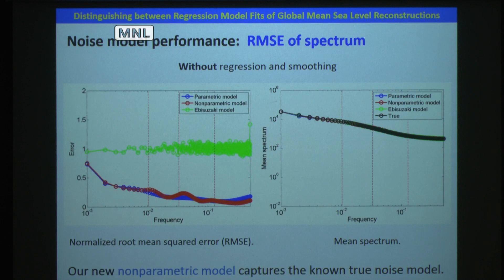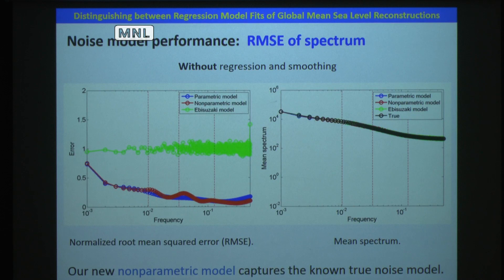The green line represents the Abusuzaki model; its error is about 1, consistent with the fact that periodogram variance is as large as the periodogram itself. The blue line represents the parametric model, which is the best the true noise model can do. Our new nonparametric model has a similar error and bias, indicating that it can perform as well as the true noise model.